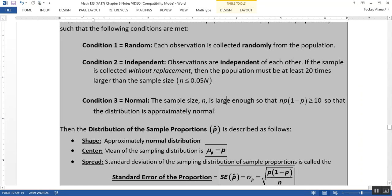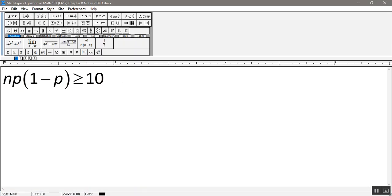Condition three is that the distribution of sample proportions will be normal. The way to make that happen is to make it so that n is large enough so that n times p times (1-p) will be greater than 10.